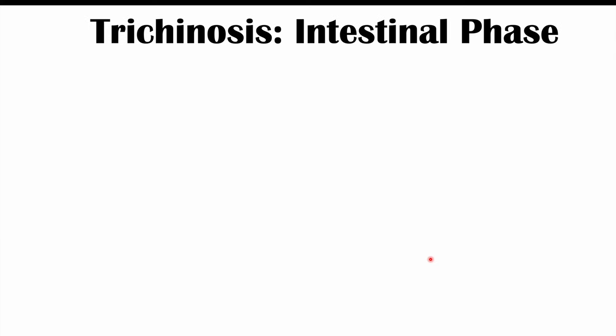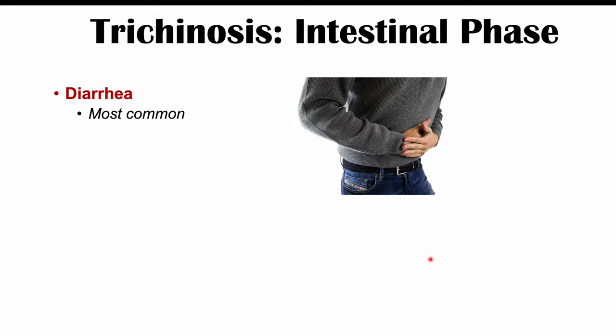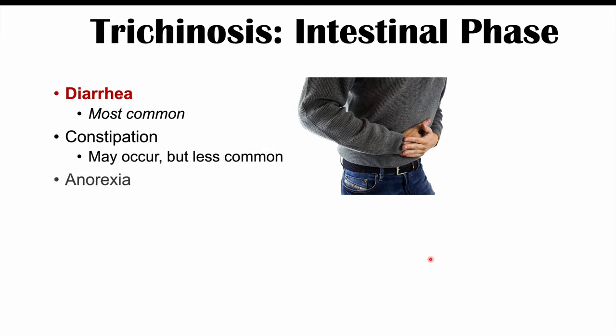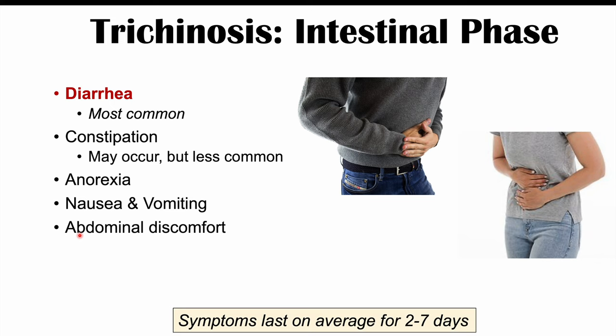In the intestinal phase, if patients are symptomatic, the most common symptom is diarrhea. In other cases, patients may experience constipation, although this is less common. Patients can also experience anorexia — loss of appetite and weight loss — as well as nausea, vomiting, and abdominal discomfort. These signs and symptoms can last on average from two to seven days.